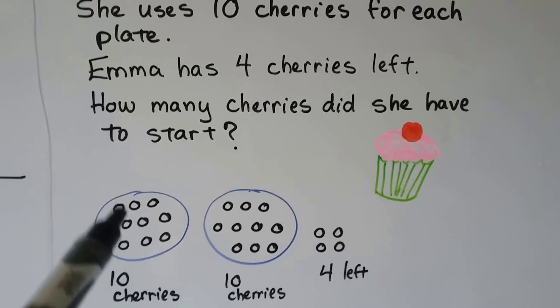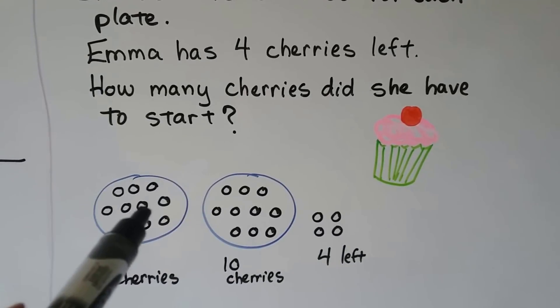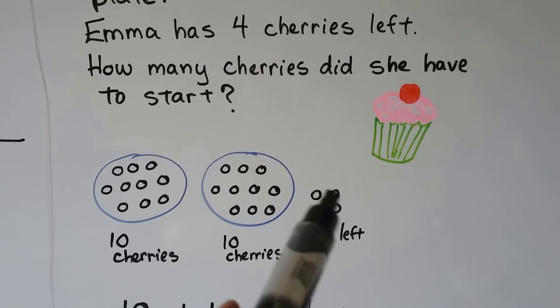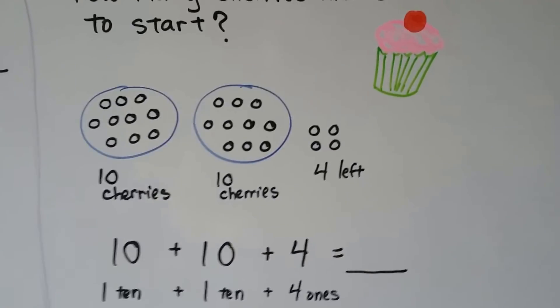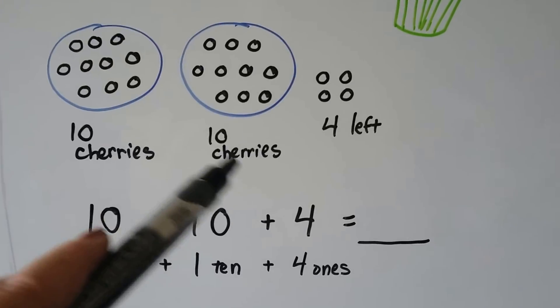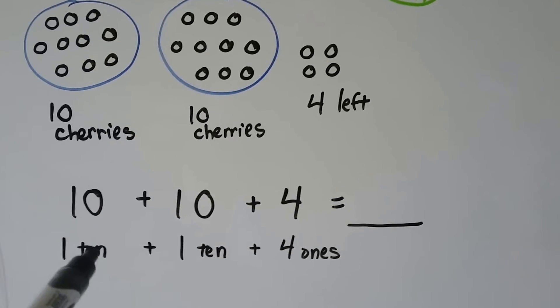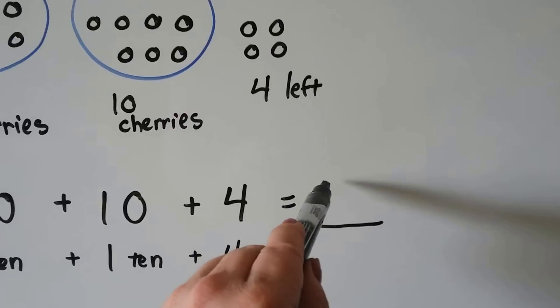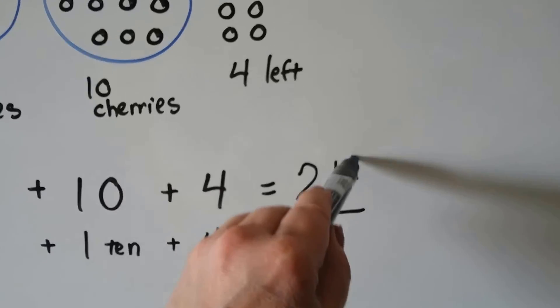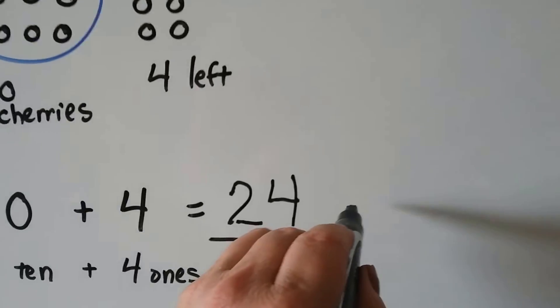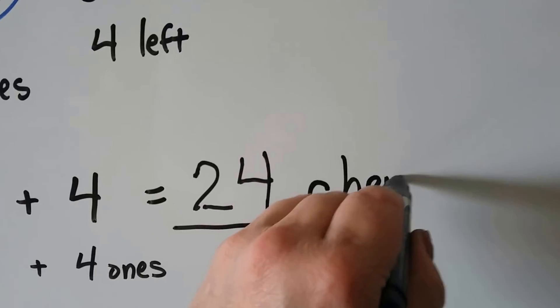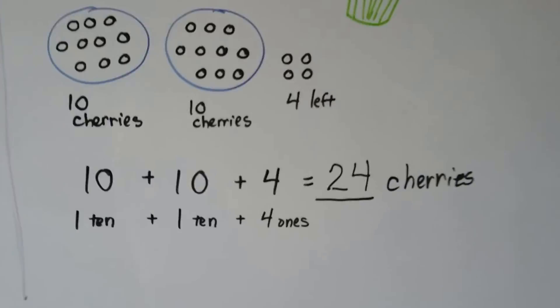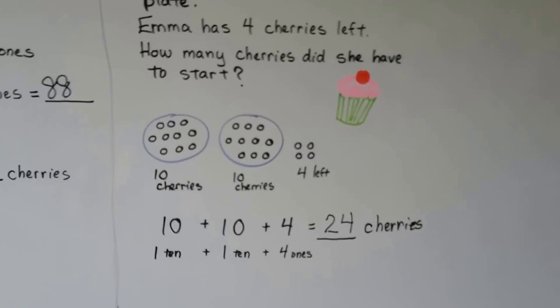So what we can do is we can draw a plate and draw the 10 cherries she used and draw another plate, the second plate, and draw the 10 cherries she used. And then she had 4 left over and we can add them all together. 10 plus 10 plus 4. That's 1 ten plus 1 ten. That makes 2 tens plus 4 ones. She had 24 cherries. It's important we label what they were. 24 cherries. That's how many she had when she started.